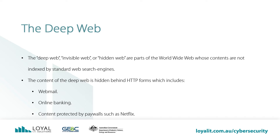The deep web, the invisible web, or the hidden web are parts of the worldwide web whose contents are not indexed by standard web search engines. The content of the deep web is hidden behind HTTP forms and includes many very common uses such as web mail, online banking, private or otherwise restricted access social media pages and profiles, some web forums that require registration for viewing content, and services that users must pay for and which are protected by paywalls such as video on demand like Netflix and some online magazines and newspapers.